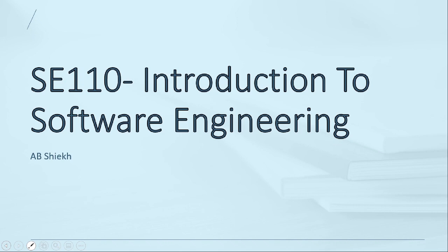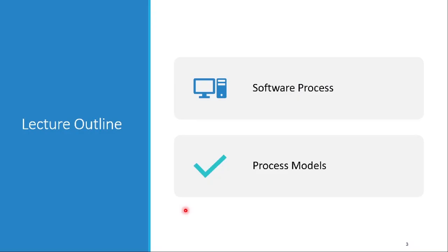Bismillahirrahmanirrahim, Assalamu Alaikum everyone, hope you all are doing good. So let's begin the lecture of today. The lecture outline is software processes, in which we will learn a generic process framework including certain framework and umbrella activities. Then we will learn process models — waterfall, incremental, prototype, and spiral models.